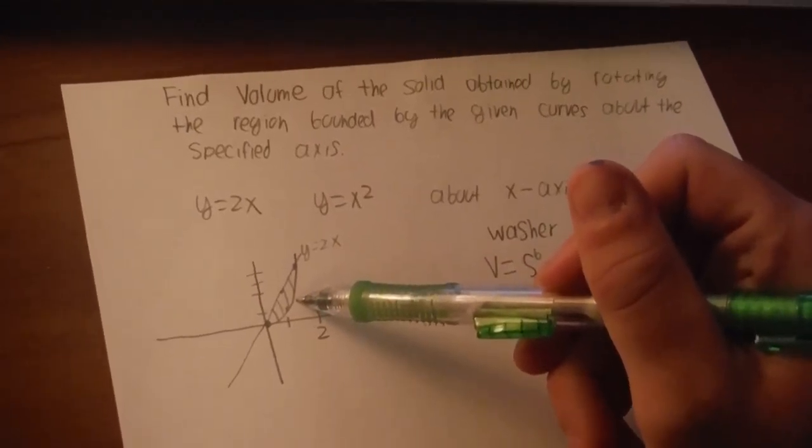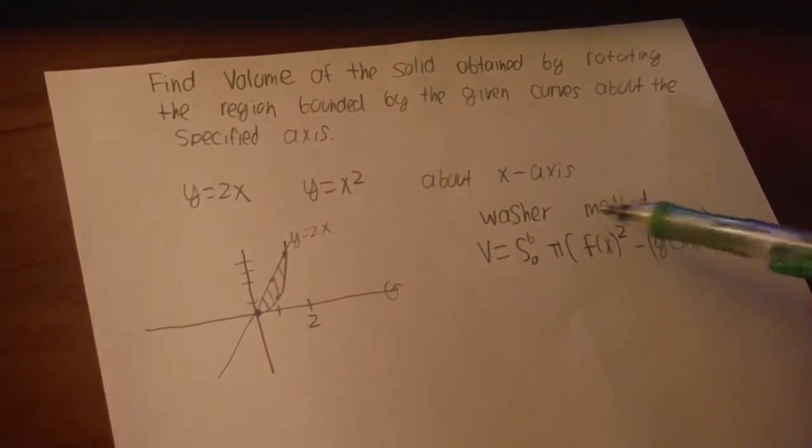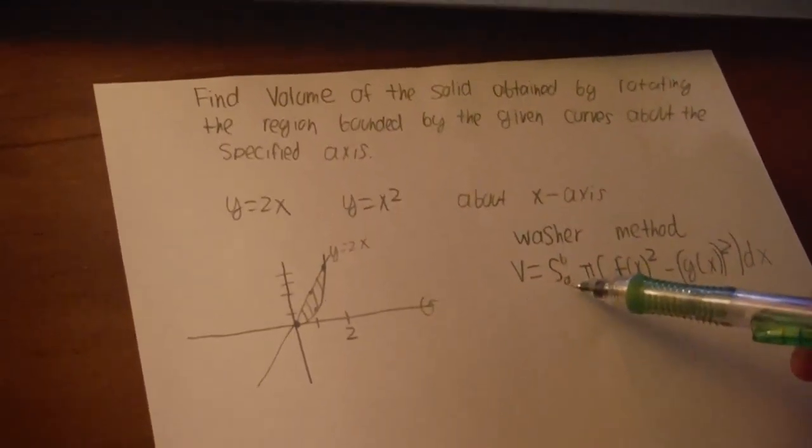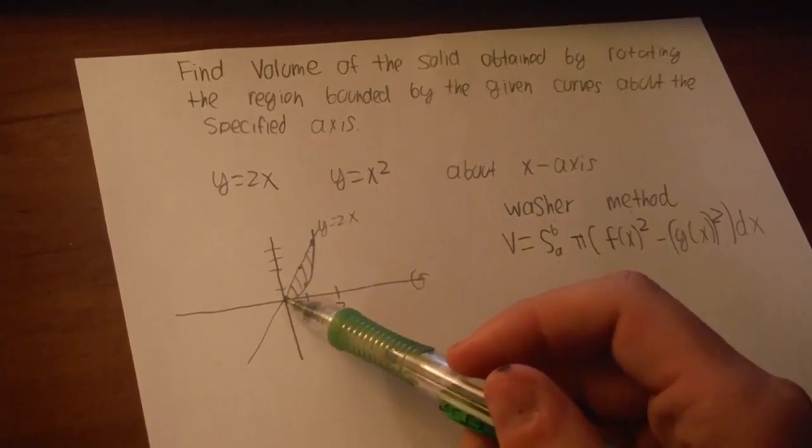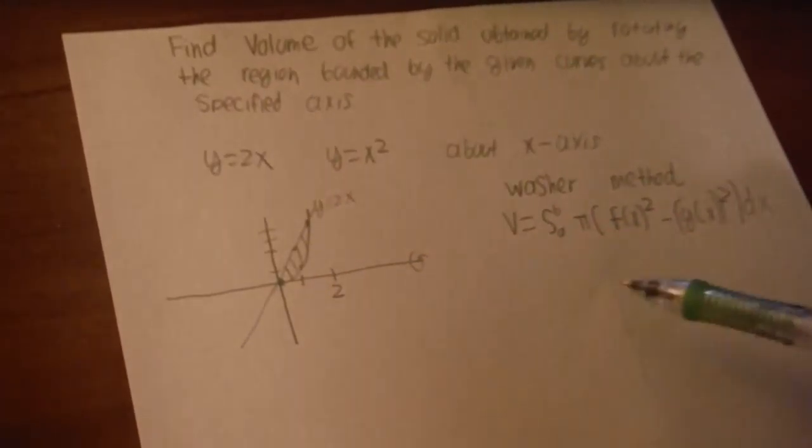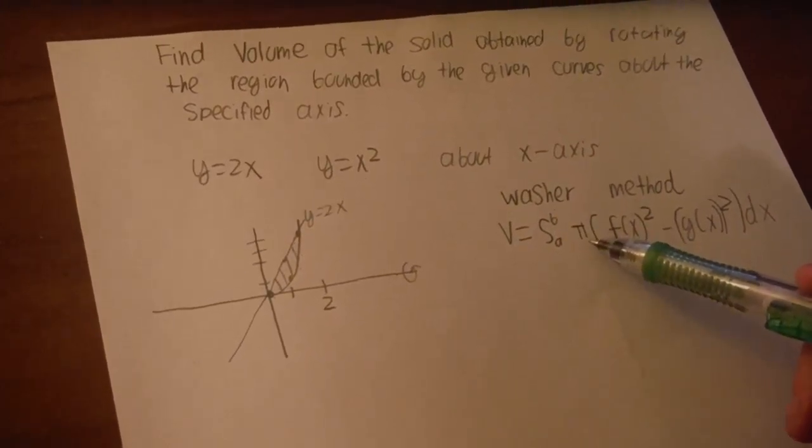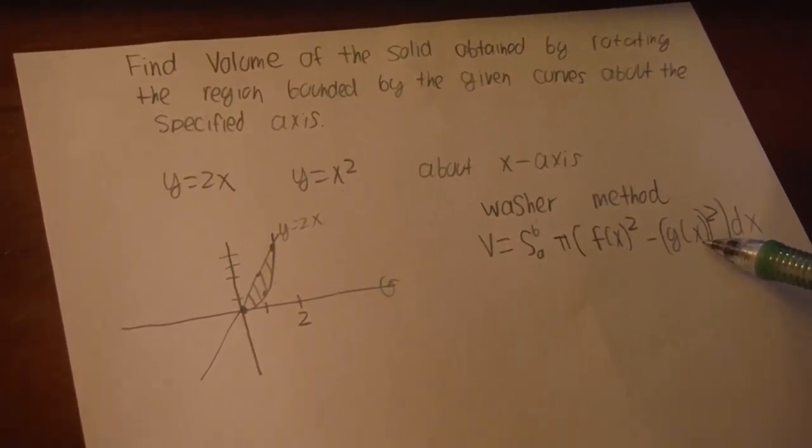Doing this, you want to use the washer method. The formula for that is V equals the integral from the bounds, so for this problem, a to b will be from 0 to 2, this is where the region is bounded, times the integral of pi times f of x squared minus g of x squared, dx.